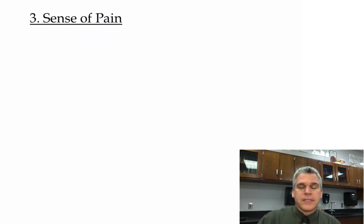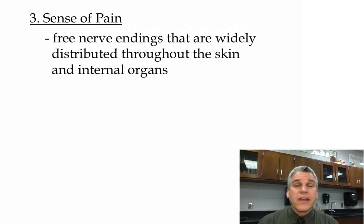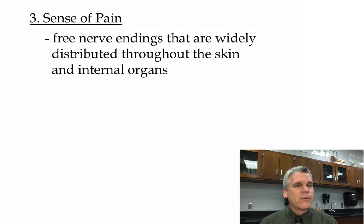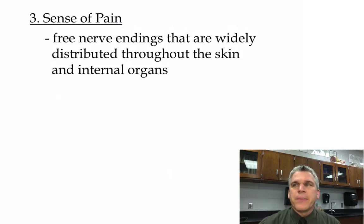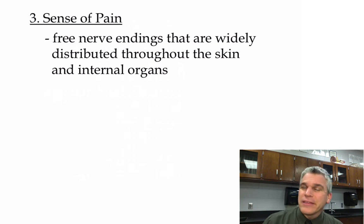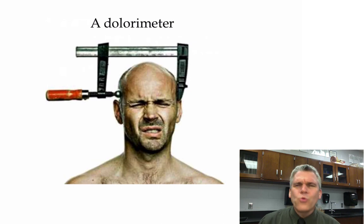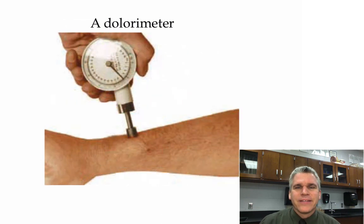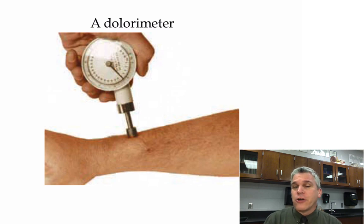The sense of pain uses free nerve endings found throughout the skin as well as our internal organs. Pain is measured in units called doles, and the instrument used to measure pain is called a dolerimeter. You can apply a certain amount of pressure onto skin and people rate that pain level.